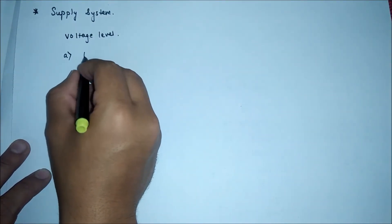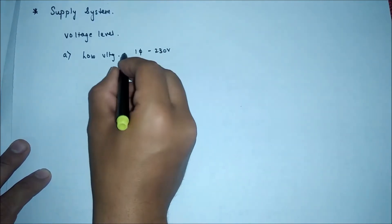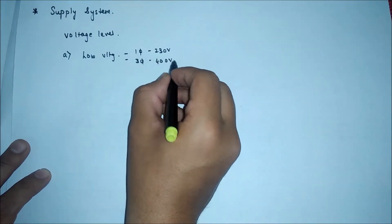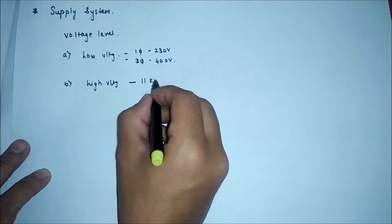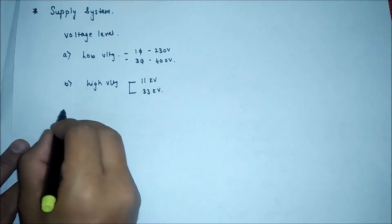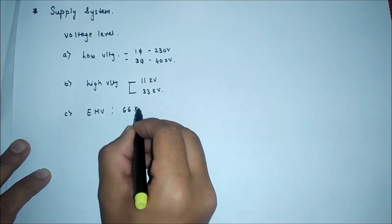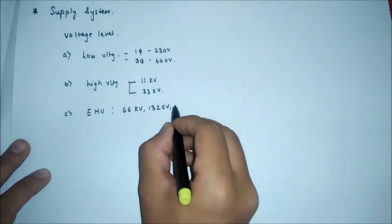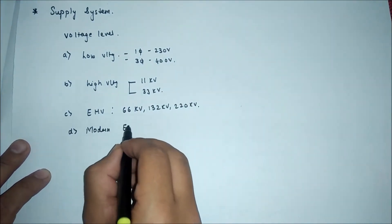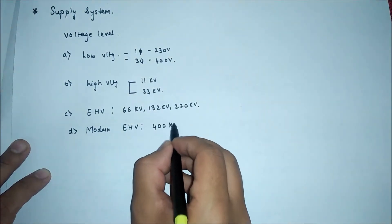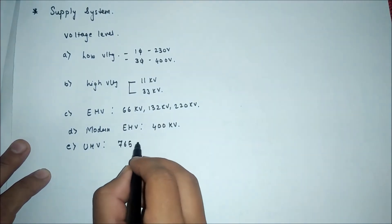There are mainly 5 types. First is low voltage, in which there is single phase which operates on 230V and 3 phase which operates 400V. Second one is high voltage which operates 11KV and 33KV. Third one is extra high voltage which operates on 66KV, 132KV and 220KV. Next one is modern extra high voltage which operates on 400KV and last one is ultra high voltage which operates on 765KV and above.